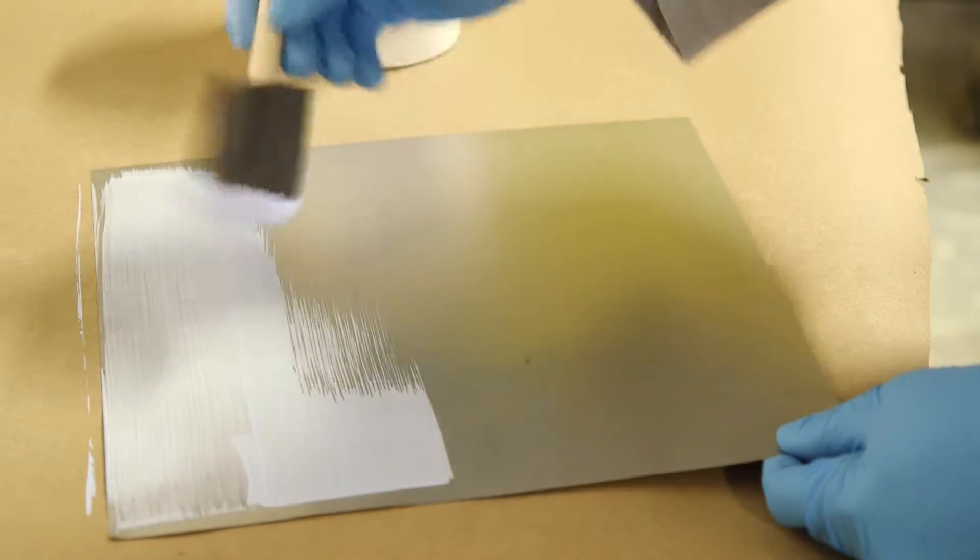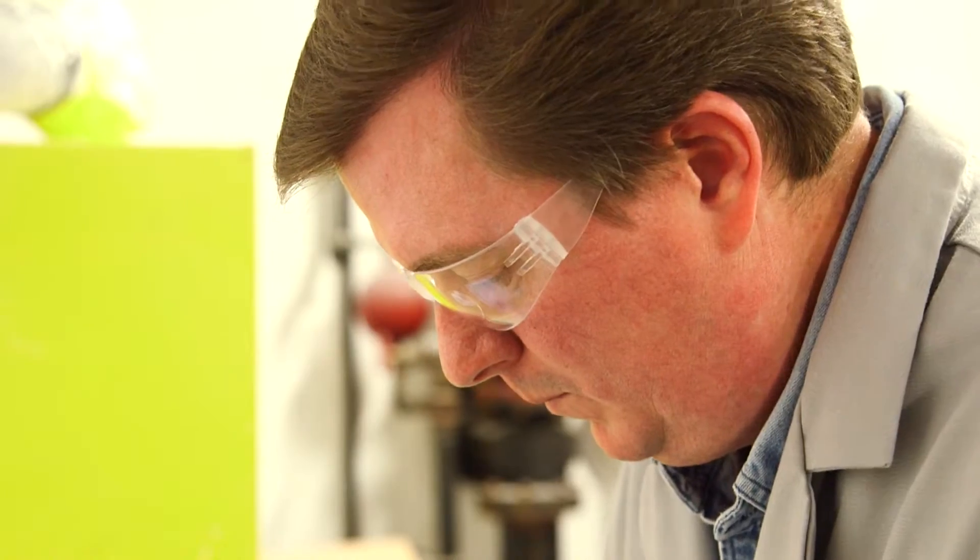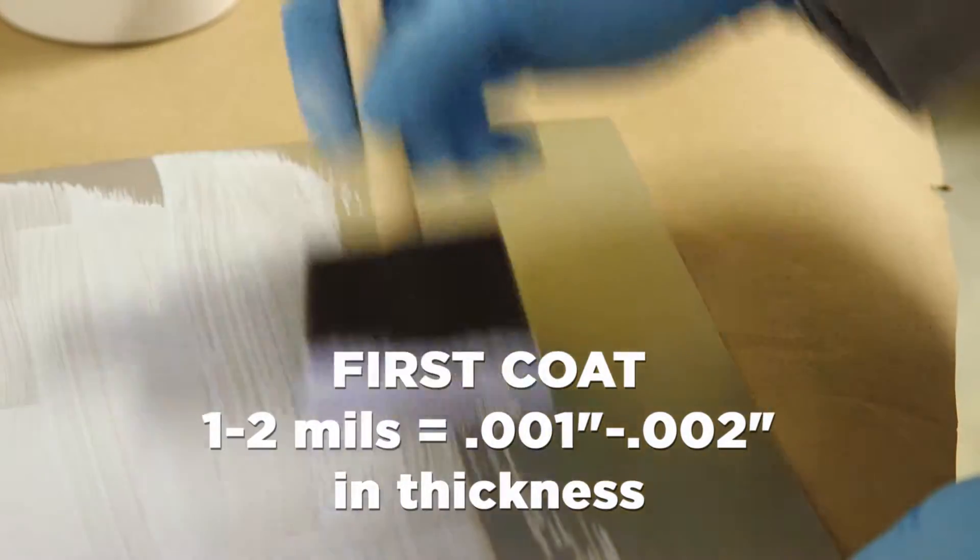First, a single thin layer is applied uniformly over the metal part with the foam rubber brush, yielding about one to two mils or one to two thousandths of an inch in thickness for the first coat after drying.